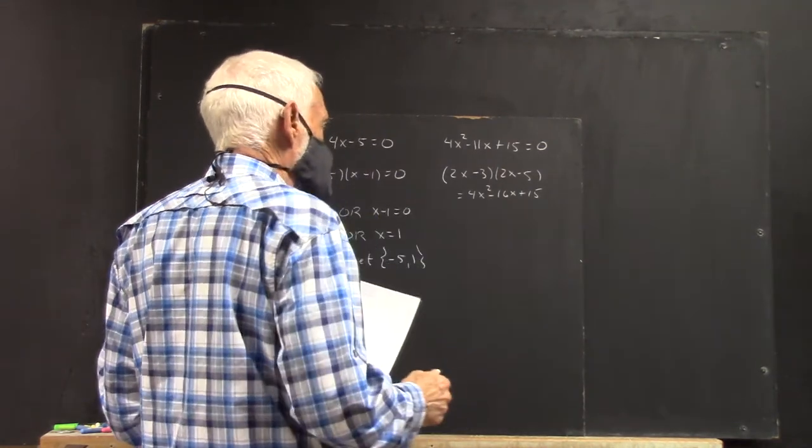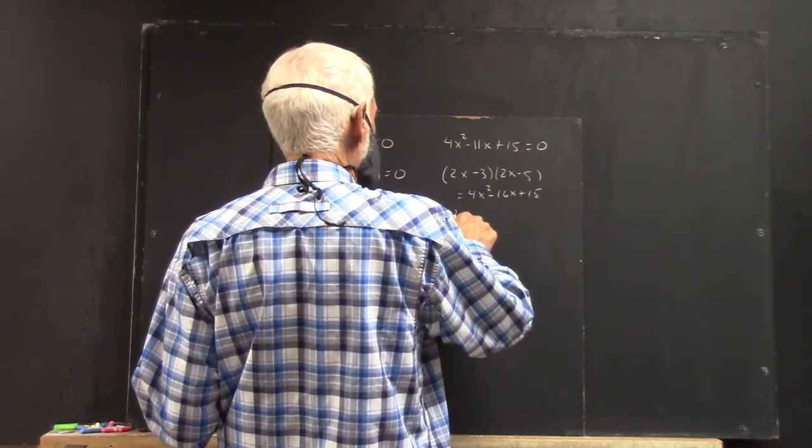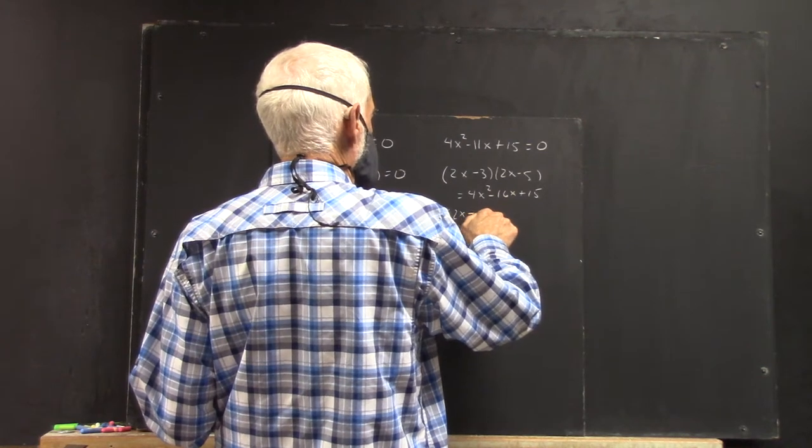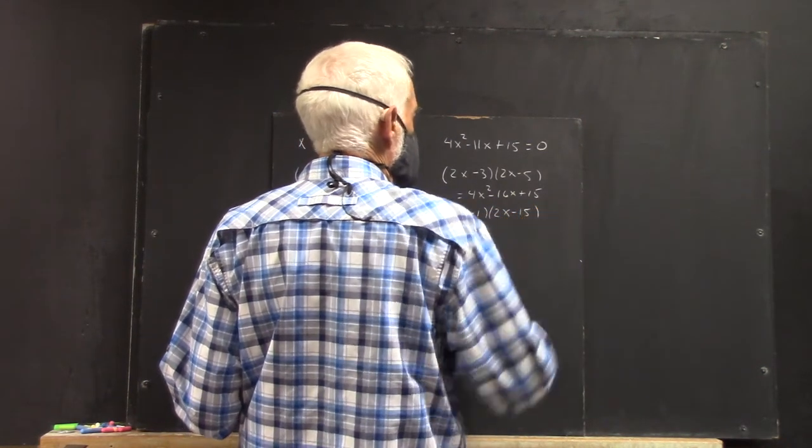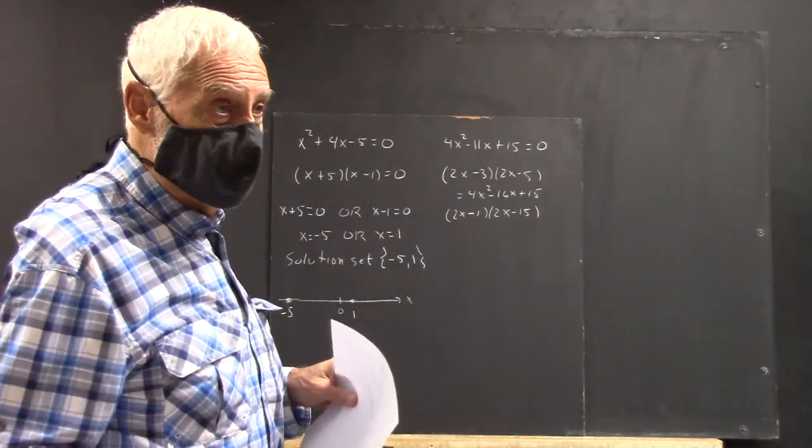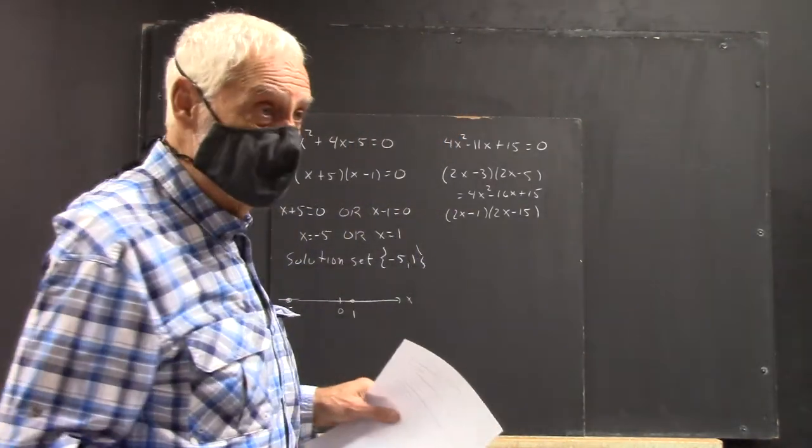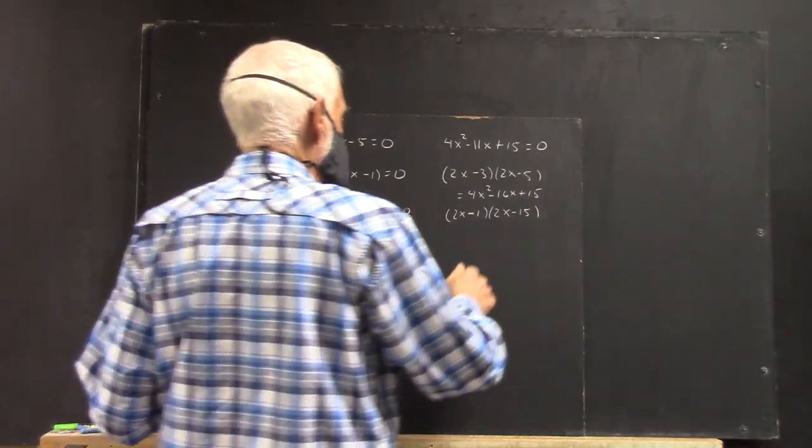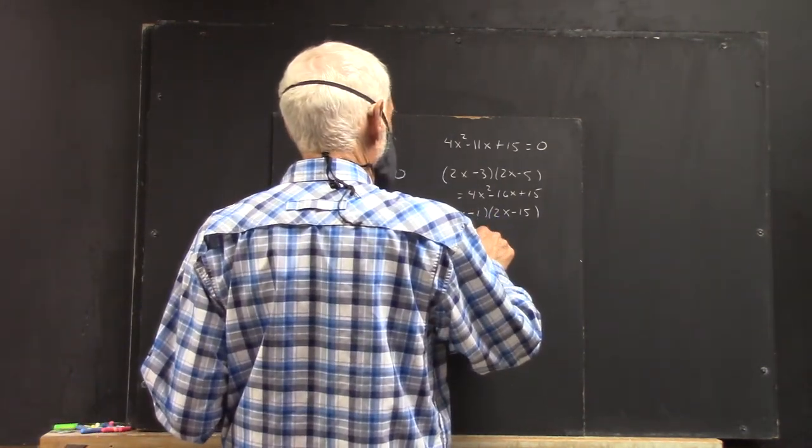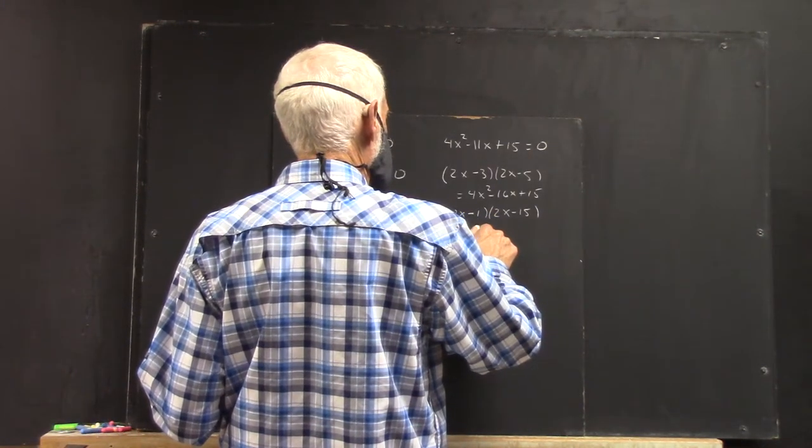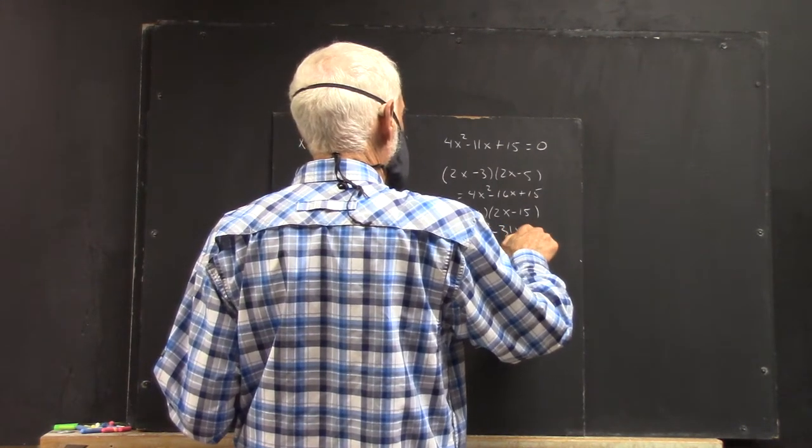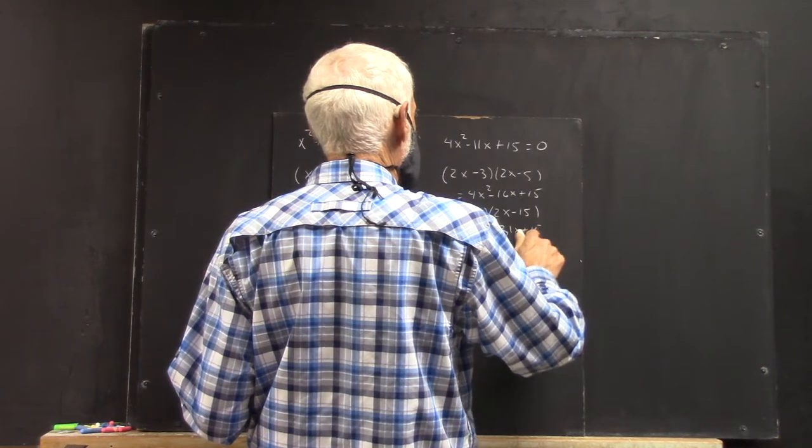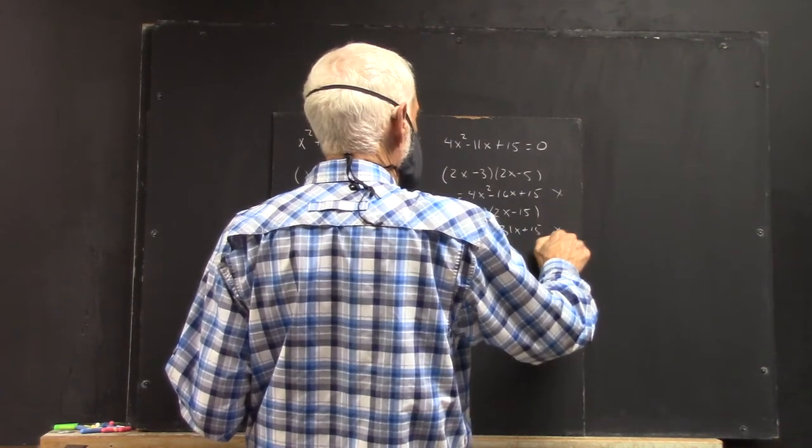And there's, you could also try 2x minus 1 and 2x minus 15. But that's even worse. Okay. That gives you negative, well, it gives you 4x squared minus 31x plus 15. You know.